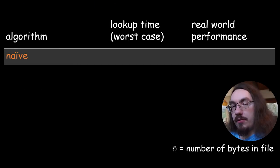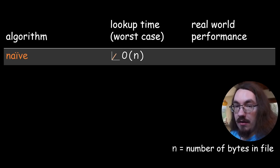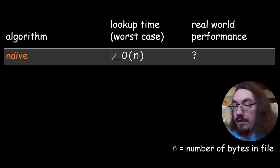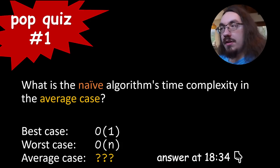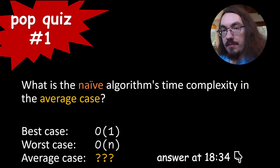Here's a table of the algorithms we've looked at so far. We have our naive algorithm, and as we saw, the time complexity in the worst case is O(n), where n is the number of bytes in the file. We don't have a frame of reference yet, so we can't evaluate real-world performance — let's try a different algorithm. Pop quiz: what is the time complexity of the naive algorithm in the average case?